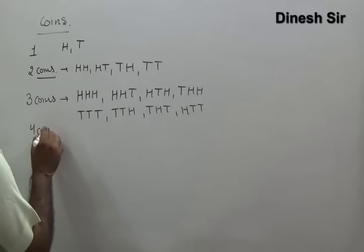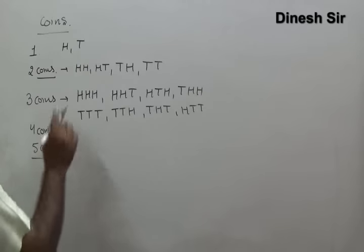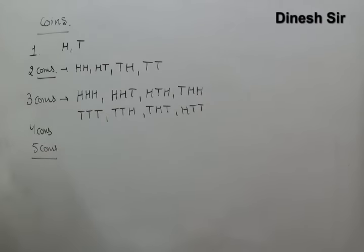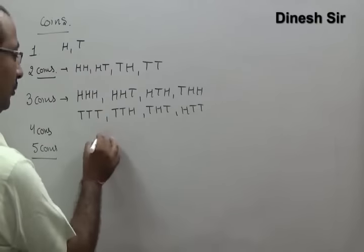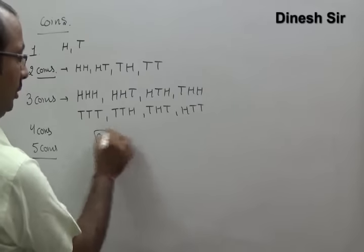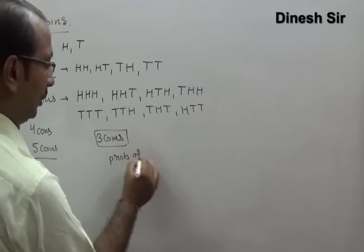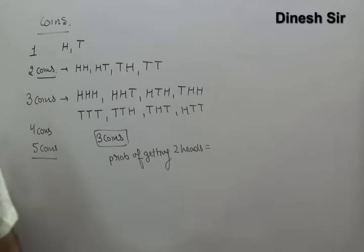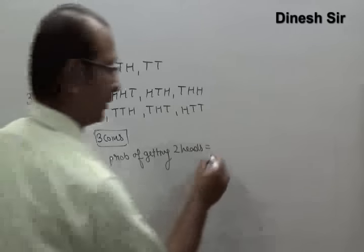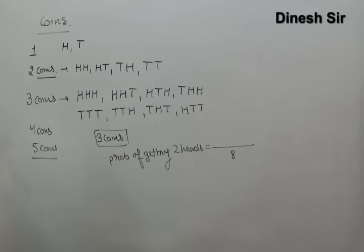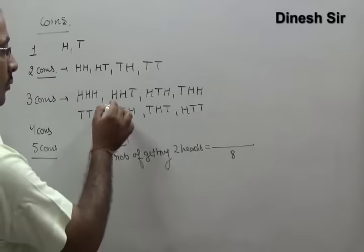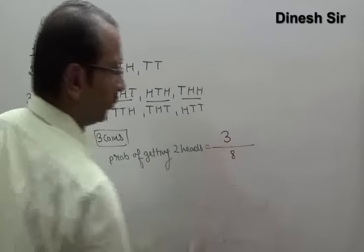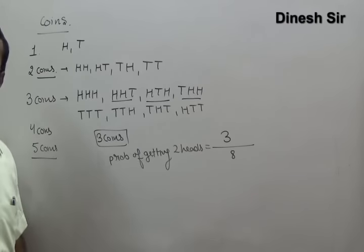When the number of coins increases to four or five, it becomes difficult to enumerate the sample space. For example, if 3 coins are thrown and we want exactly 2 heads, from the sample space we find 3 favorable cases (HHT, HTH, THH), so probability = 3/8. But when 10 coins are thrown and we want exactly 4 heads, listing the sample space is impractical.